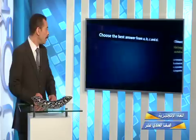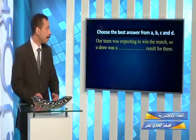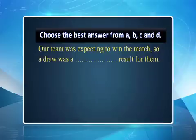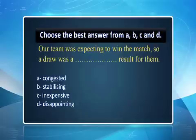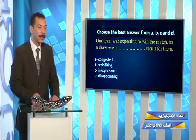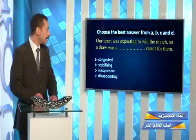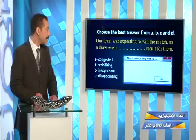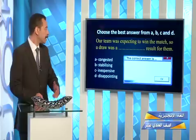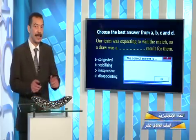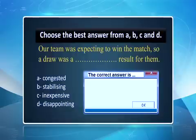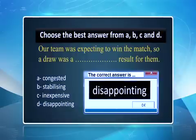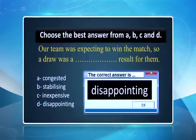Next: our team was expecting to win the match, so a draw was a blank result for them. We have congested, stabilizing, inexpensive, and disappointing. The team was expecting to win, but finally they ended with a draw — that is the same result. So the result was disappointing — that is, not as they were expecting. Excellent.